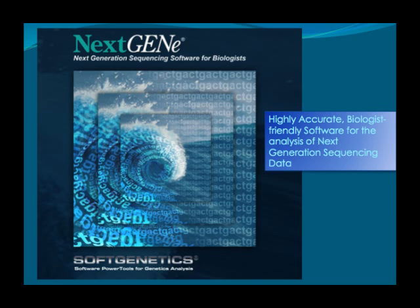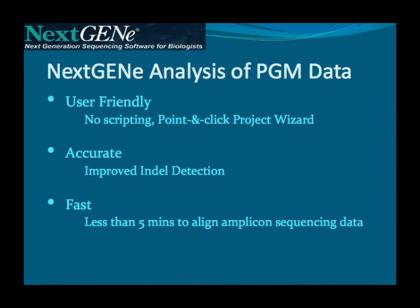NextGene software is designed to be a highly accurate, biologist-friendly tool for analyzing next-generation sequencing data, such as data from the IonPGM sequencing system. NextGene is user-friendly, with no scripting required, and a project wizard that guides you through project setup step-by-step. In the next few slides, we'll take a look at the project wizard. NextGene also includes highly accurate alignment algorithms, which are able to accurately align reads with indels, allowing detection of indels up to one-third of the total read length.